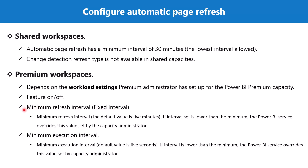This fixed interval option is called the minimum refresh interval. The default value is five minutes. If the user has set an interval lower than the minimum value specified by the administrator, the Power BI service overrides the value set by the report developer.